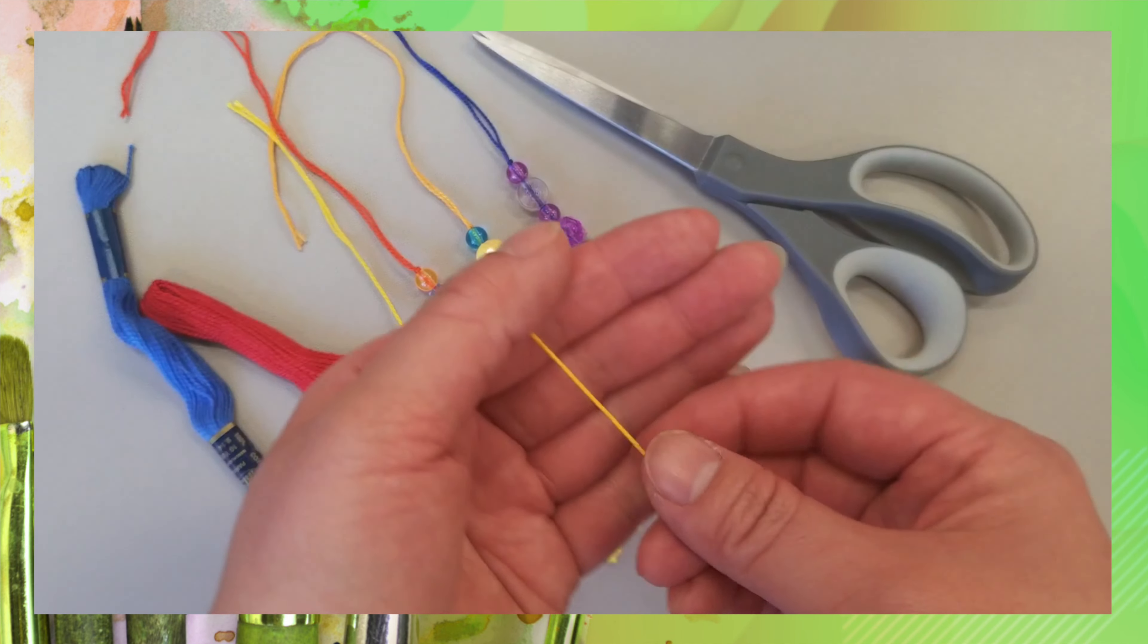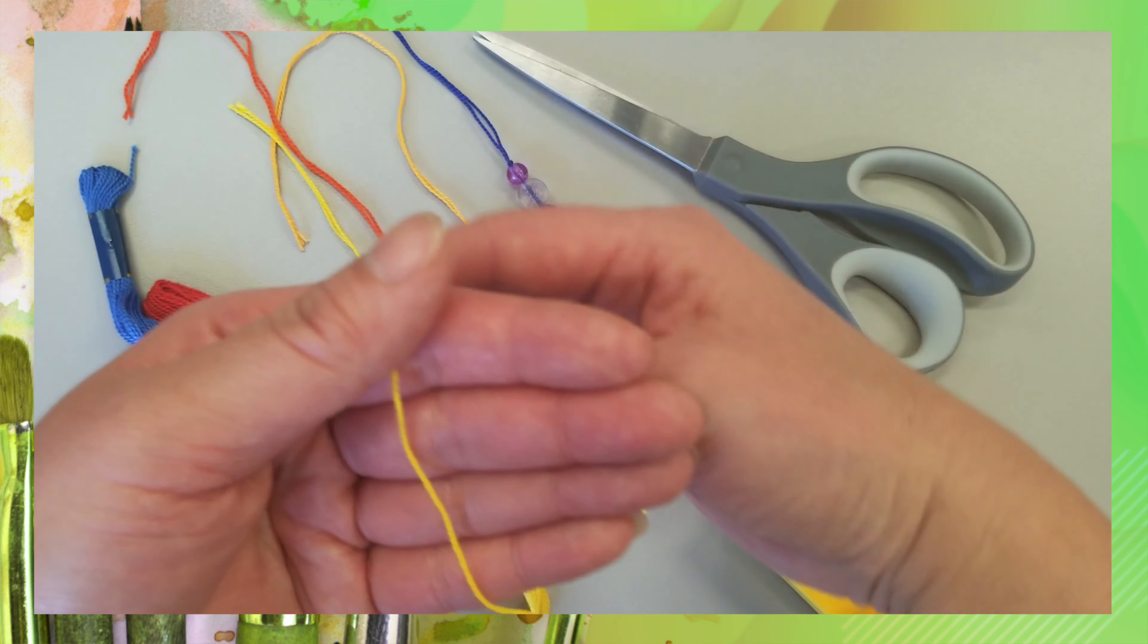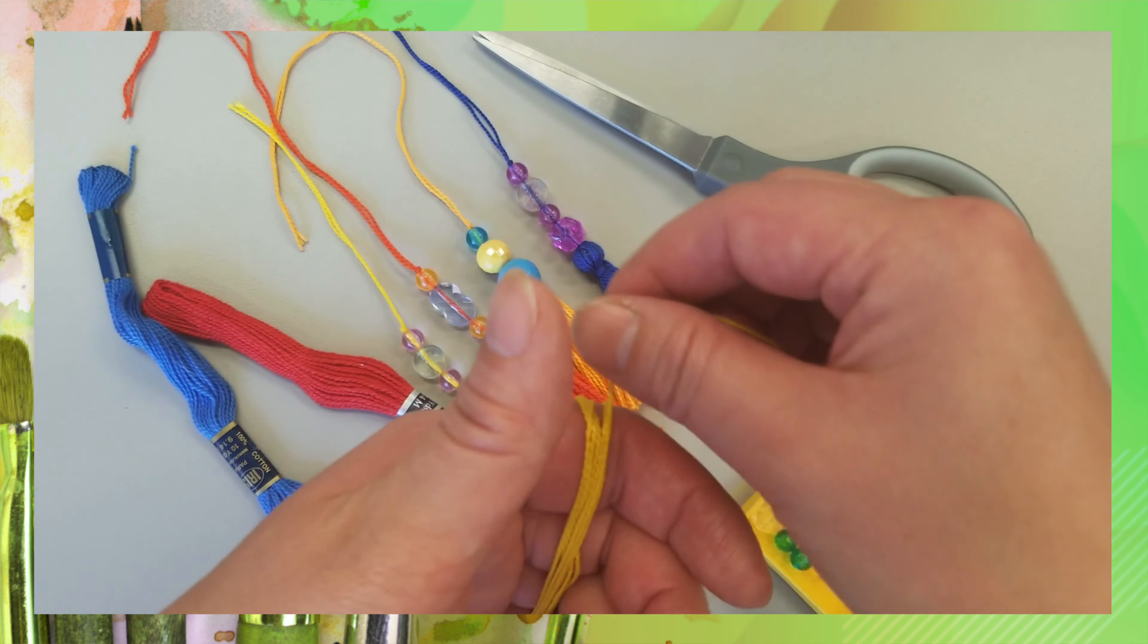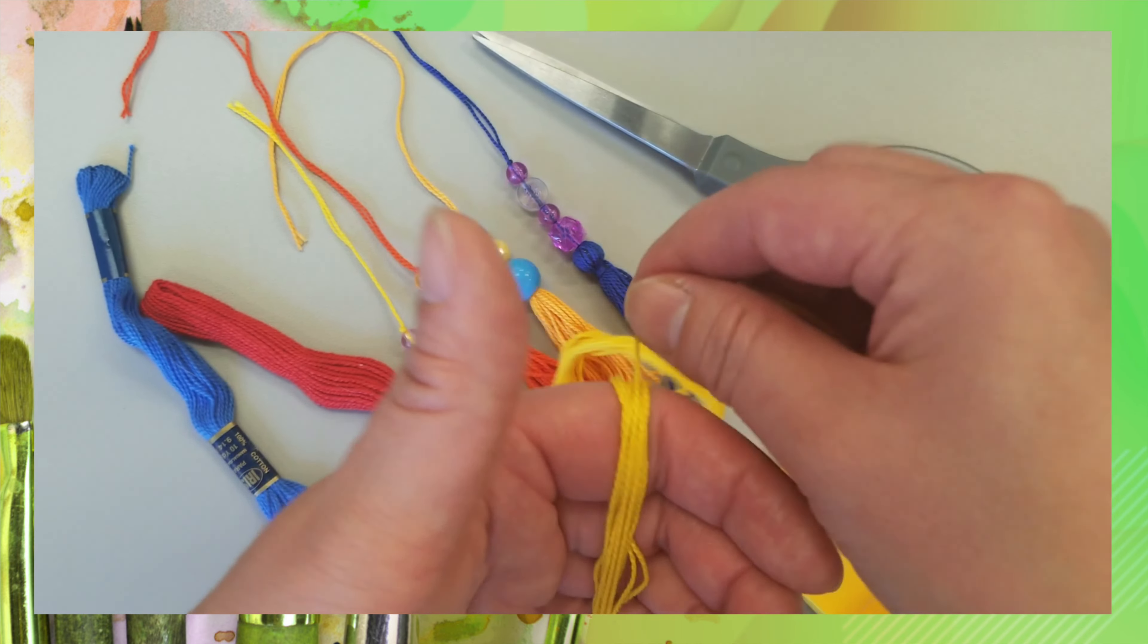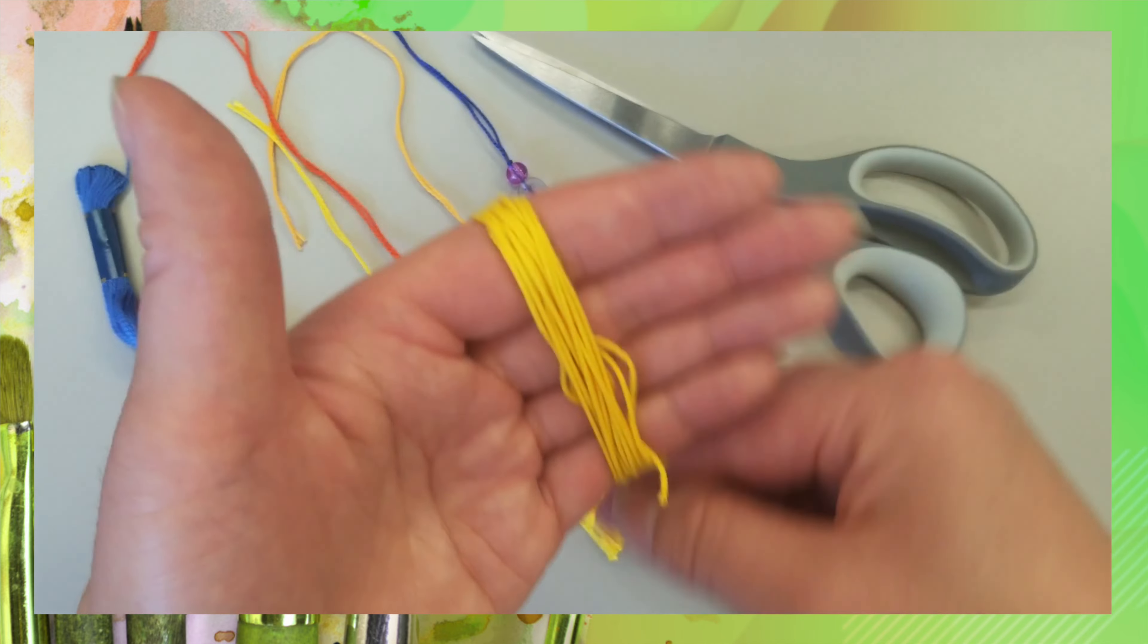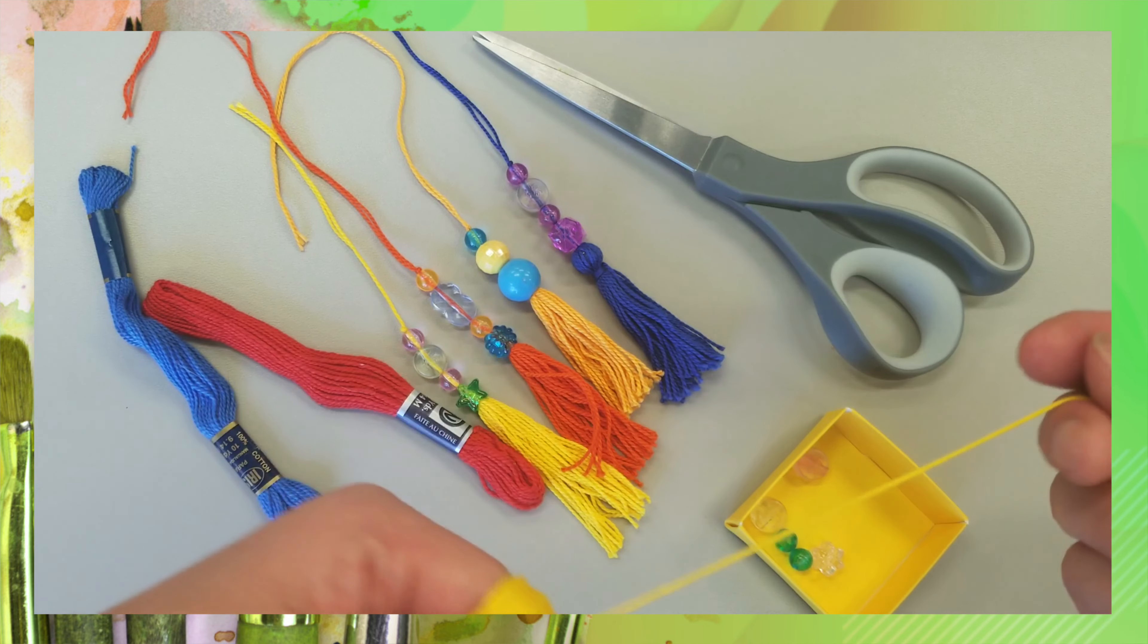So grab your yarn. The first thing we're going to do is align it to the bottom of your fingers like this and then wrap it around your fingers gently. You don't want it to be too tight, just evenly. And the more times you wrap it around the fuller your tassel is going to be, right about 20 to 25 wraps, that sounds about right.